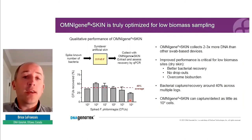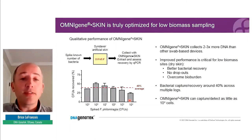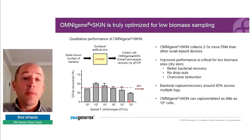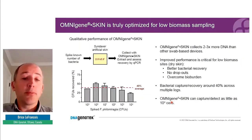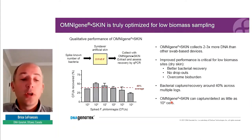Overall, our data indicate that OmniGene Skin collects two to three times more DNA than other swab-based devices. That improved performance is critical for lower biomass skin sites such as dry skin — better bacterial DNA recovery ensures fewer dropouts, and better capture of the skin microbiome helps overcome bioburden. Our optimized workflow recovers around 40% of the total bacterial load across multiple log ranges, and we were able to detect as few as 10⁴ cells spread on artificial skin.